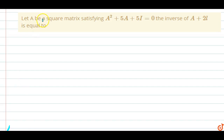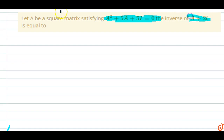In this question, let A be a square matrix satisfying A² + 5A + 5I = 0. We have to find the inverse of the (A + 2I) matrix.